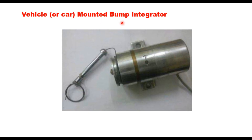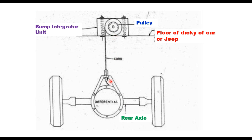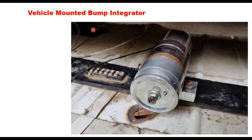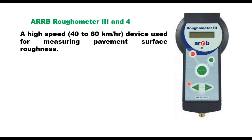The vehicle or car-mounted bump integrator is also a response type device. This unit is mounted in the boot on the rear axle of a car — the pulley is on the floor of the boot and that is the bump integrator unit. This unit integrates unevenness in centimeters or pulses via two sensors, one each for bump and distance measurement, together with a recording system. For measurement, the vehicle is run at a speed of 32 km/h, the same as the fifth wheel bump integrator.